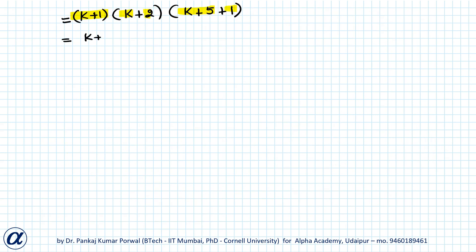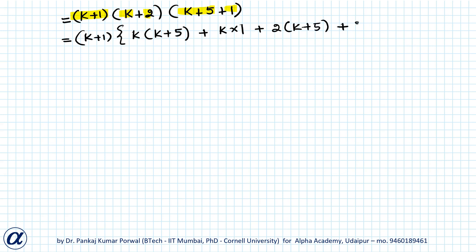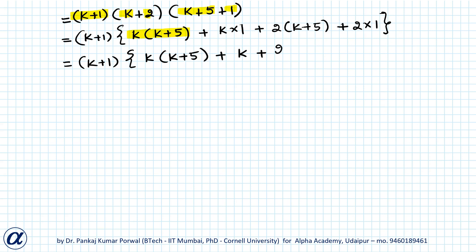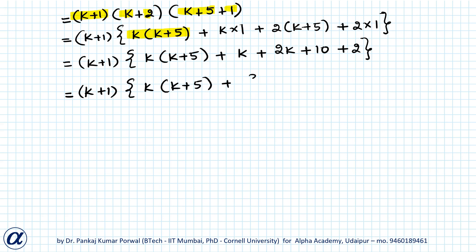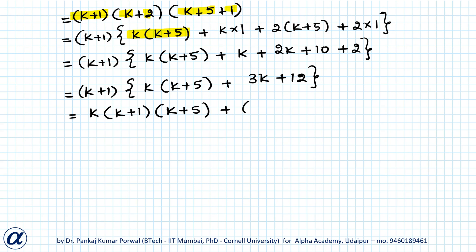This gives me (k+1)[k(k+5) + k·1 + 2(k+5) + 2·1], which equals (k+1)[k(k+5) + k + 2k + 10 + 2], which equals (k+1)[k(k+5) + 3k + 12].